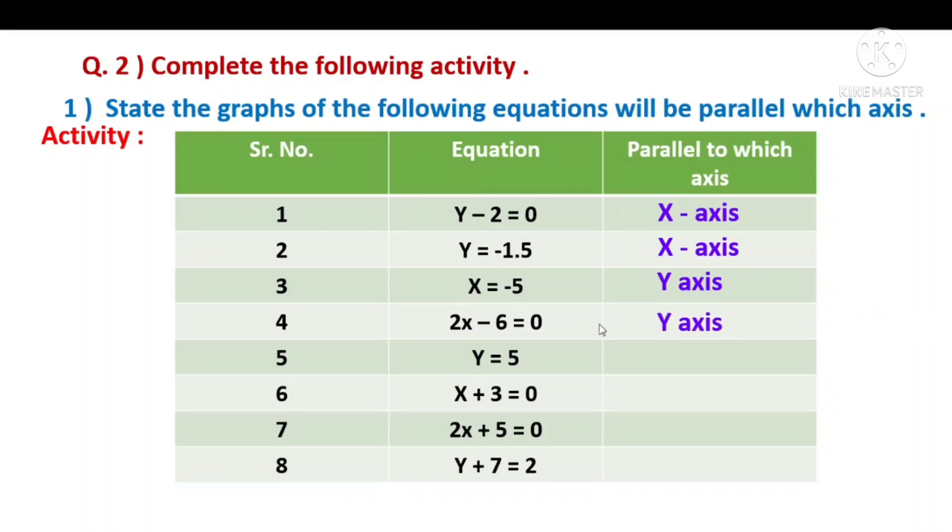If y value is given, then it's parallel to x-axis. If x value is given like x is equal to minus 3, this is parallel to y-axis. If x value is there, it's parallel to y-axis. And if y is equal to plus 7 or minus 7, minus 5, y is equal to minus 5, this is parallel to x-axis.